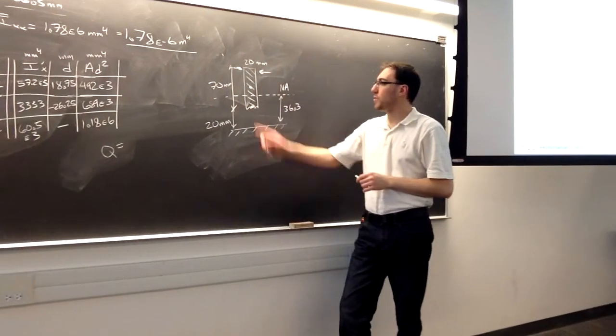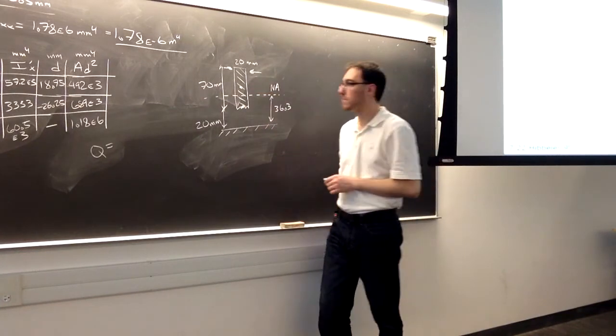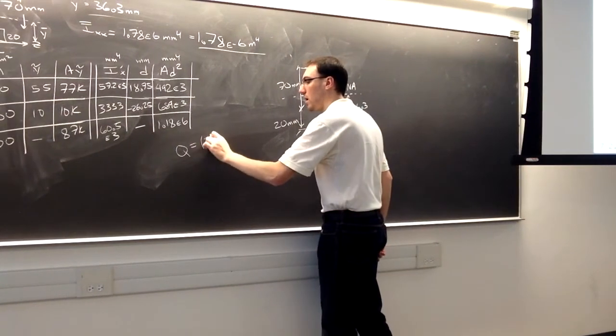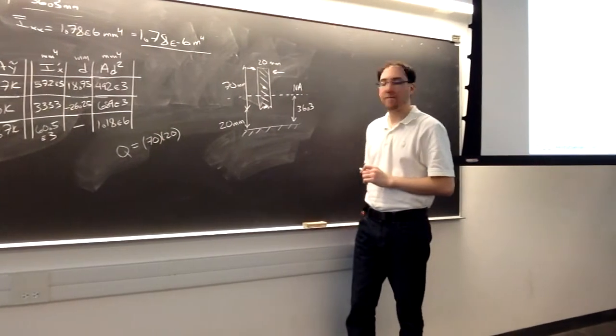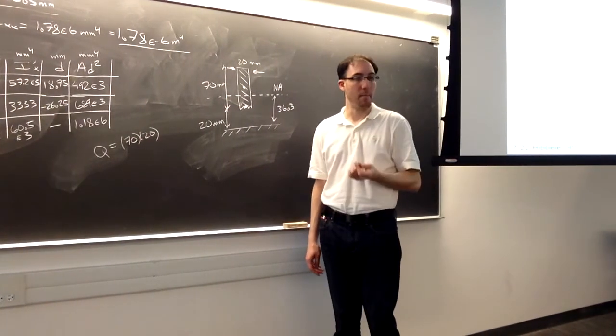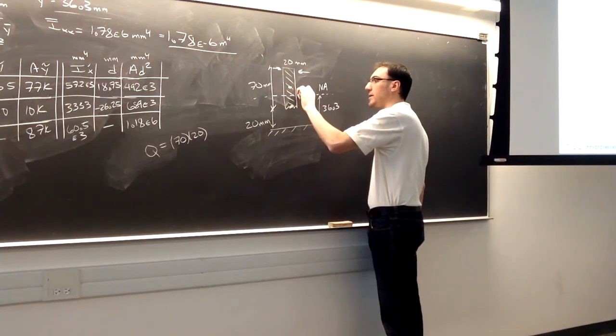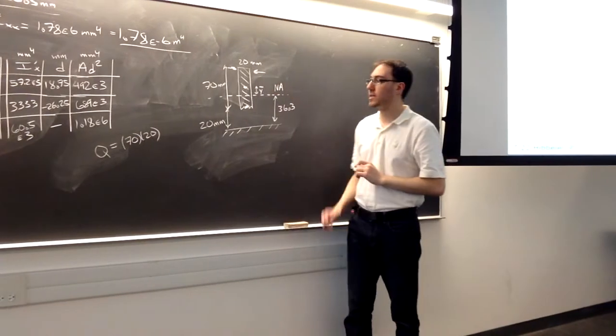So to find Q for our mini shape, we need to find the mini shapes area. For the mini shape, it's 70 by 20. And we need to find Y bar for the mini shape. So that's going to be from the mini shape centroid to the neutral axis. That distance is Y bar.